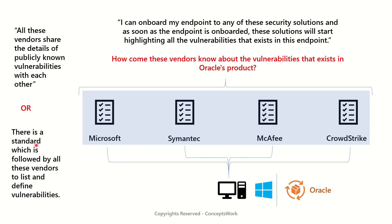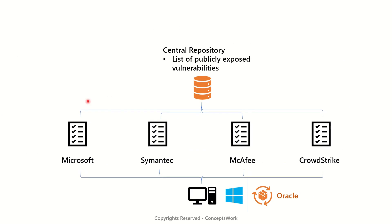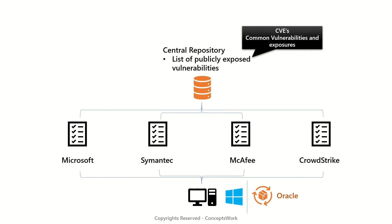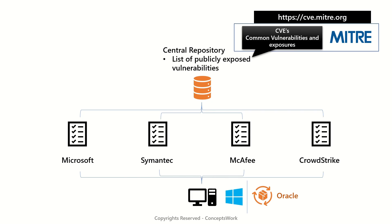Or there is a standard followed by all these vendors to list and define the vulnerabilities that exist. The second statement makes a lot more sense, and that is exactly what happens. There is a central repository which has the list of all publicly exposed vulnerabilities found in different products and reported by these vendors. This list is termed CVE, which stands for Common Vulnerabilities and Exposures. This method of defining vulnerabilities has been standardized by MITRE, and the link you can navigate to check all the details is cve.mitre.org. Let me show you this in action.